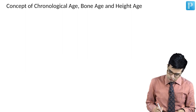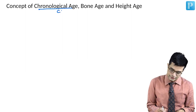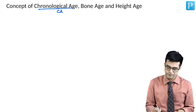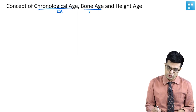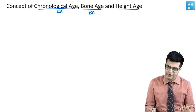The first thing is chronological age, written in short as CA. Then bone age, also called skeletal age, written as BA. And height age, written as HA.